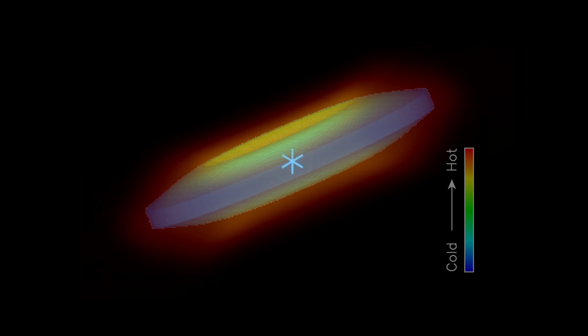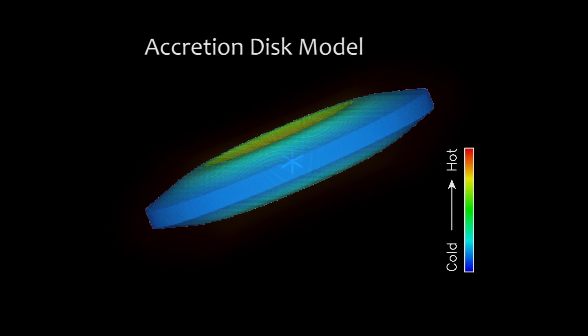The structure of the dark lane implies that the disk is flared, as expected in an accretion disk model.